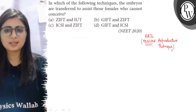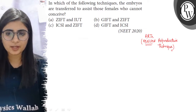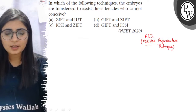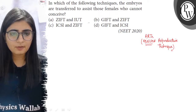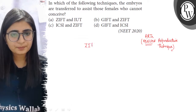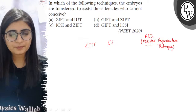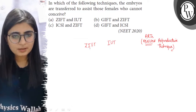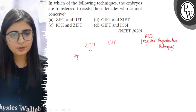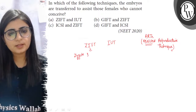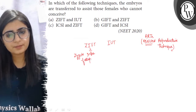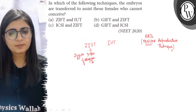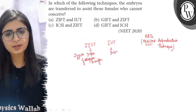These are Assisted Reproductive Technologies or techniques. There are several kinds of ARTs. We will look at ZIFT and IUT first. ZIFT stands for Zygote Intra-Fallopian Transfer, while IUT stands for Intra-Uterine Transfer.